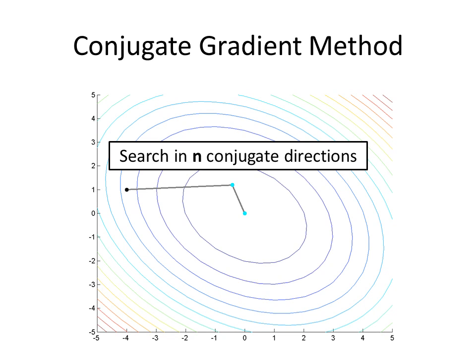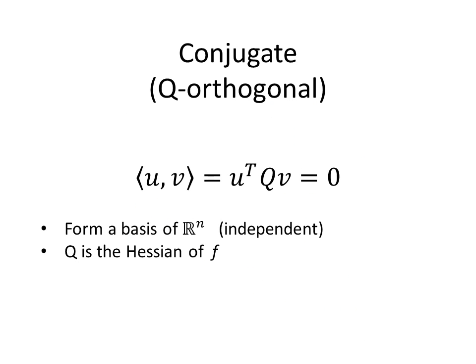This is the key idea behind the conjugate gradient method. Suppose we had an n-dimensional feature space. In the conjugate gradient method, we search n conjugate directions such that progress made in one direction does not affect progress made in the other direction. Thus, we only need to search in n directions to find the optimal point. For two vectors to be conjugate, or q-orthogonal, we can define the inner product of the two vectors u and v as u-transpose Q v. If the two vectors u and v are conjugate, then the inner product will be zero.